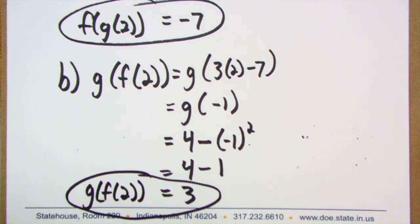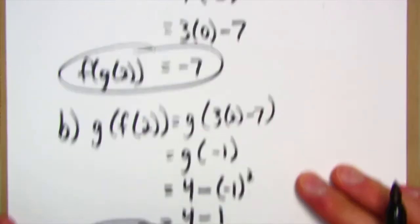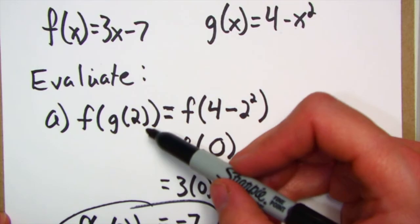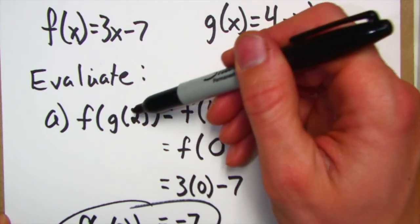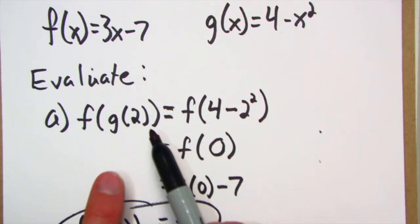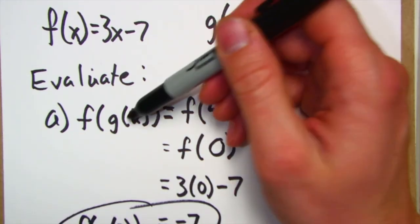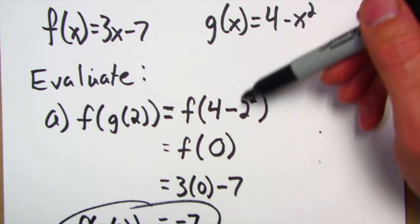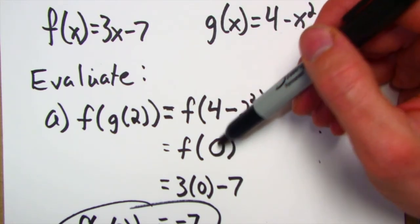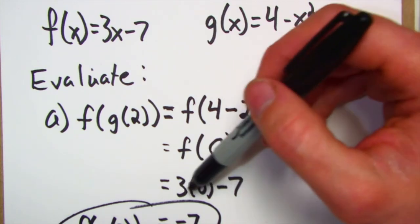So g of f of 2 ends up being 3. Starting to catch on, I hope so. Okay, so notice what we're doing here: we're basically starting with a formula, we're putting the number into the first formula that's inside here, we're doing our order of operations, we're working from the inside out. So put the 2 into the g function, got an answer out of the g function.